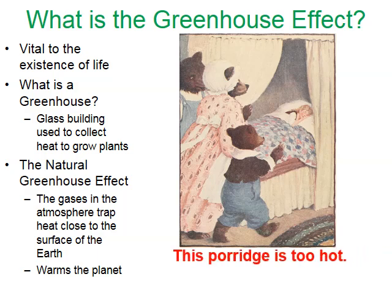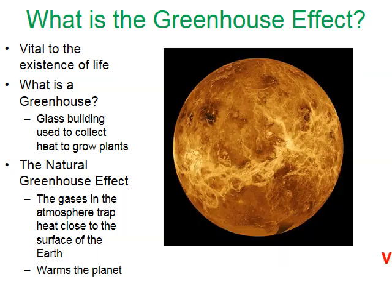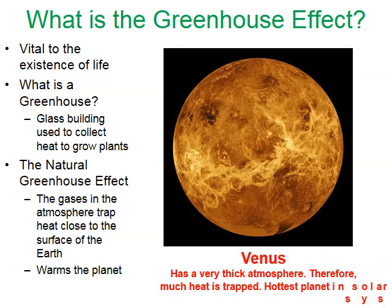This porridge is too hot. There's a planet in our solar system that is too hot for life as we know it because it has an extreme runaway greenhouse effect — Venus. Venus has a very thick carbon dioxide atmosphere. A lot of heat is trapped near the surface, and even though Mercury is closer to the Sun, Venus is still the hottest planet in the solar system because of its extreme greenhouse effect.